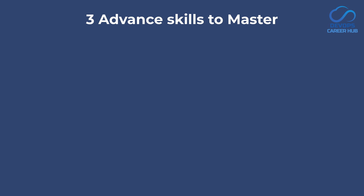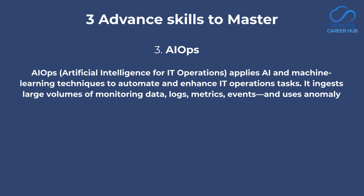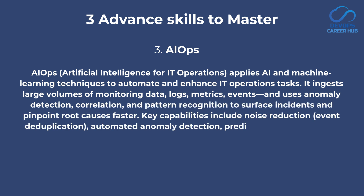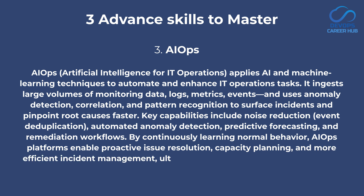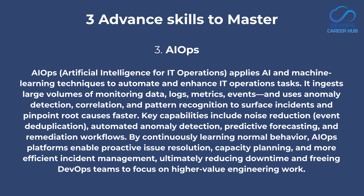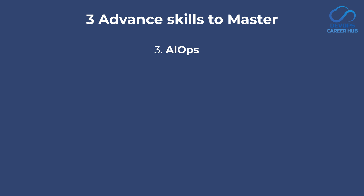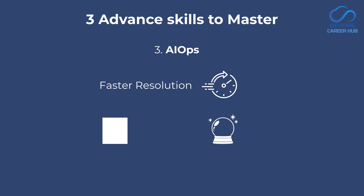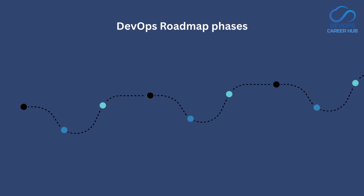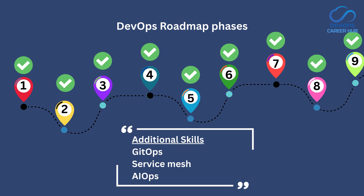The third skill I would recommend is AIOps, which is a game-changing skill to learn in 2025. In AIOps, we use artificial intelligence and machine learning to enhance DevOps workflows by analyzing and automating IT operations. AIOps acts like a smart assistant that monitors systems, predicts issues and automates responses, making pipelines, applications and infrastructure more reliable and efficient. Implementing AI will provide faster resolution to incidents and predict failures before they impact users. This is our entire DevOps roadmap for 2025 that you can follow to become a professional DevOps engineer.